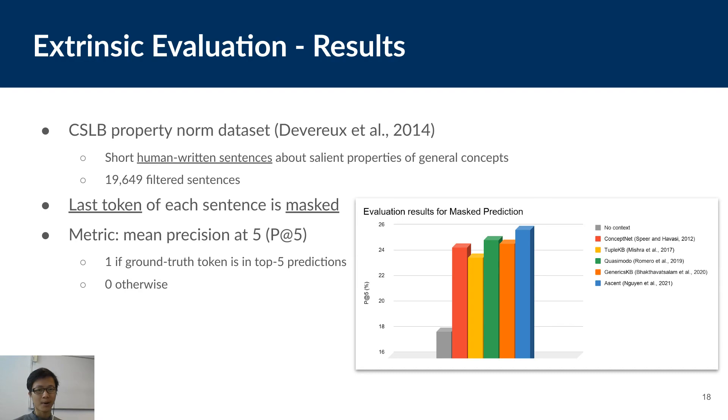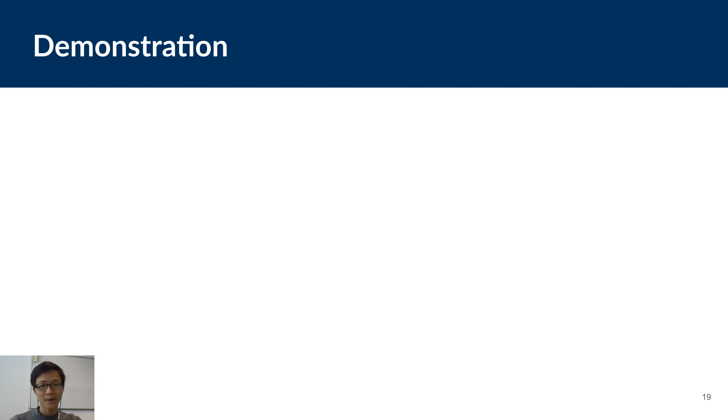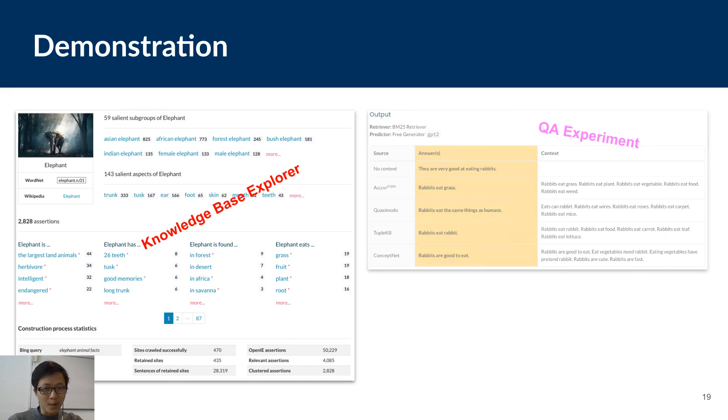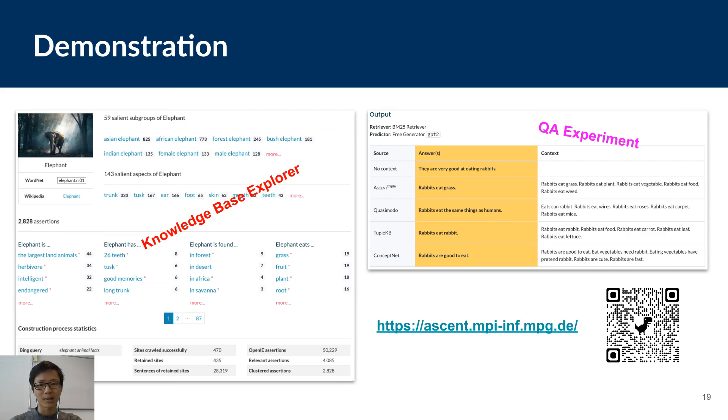The results show that all common sense KBs contribute good knowledge to the language model and help it perform statistically better than when no context is given. And our KB ASCENT performs a little bit better than other KBs in this evaluation. And even better than a text-based dataset, the generics KB. And we have also developed a demo website that allows you to explore and search our knowledge base, as well as to experiment with the QA tasks. If you're interested, why don't you take a look at the website?